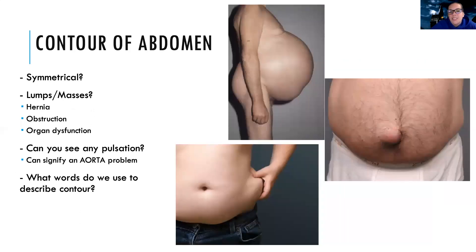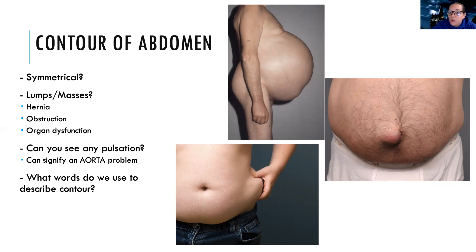We want to look at contour — is it symmetrical? Is it equal on both sides? Is there any lumps or masses? It could be a sign of a hernia, an obstruction, or some organ that's not functioning properly. Any pulsation could be a sign of an aorta problem, which is that big blood vessel in your abdomen. Words to describe contour include flat, rounded, obese, irregular, or asymmetrical — we're really just trying to describe the general shape. The person shown is not pregnant; that's what ascites is. That can be pretty intense and happens with patients with liver disorders.